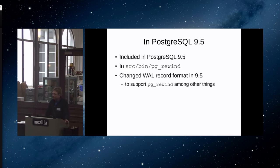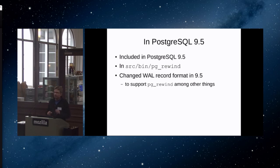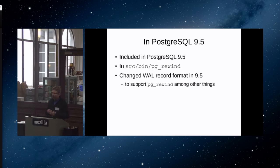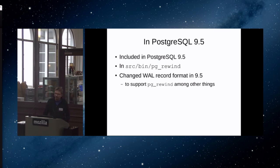The current status: PG Rewind is available in Postgres 9.5 — it went in. There were some big changes I had to make in Postgres 9.5 to support PG Rewind. I changed the WAL record format quite drastically. Before 9.5, the information about what block a certain WAL record modified was not stored in a common format — it was different for an index split, index insert, heap insert, heap update. So pg_rewind basically had to understand every different WAL record type in Postgres, with a very long switch-case statement in the code. It was very error-prone.